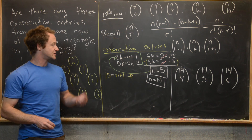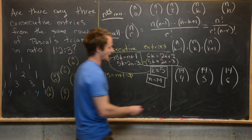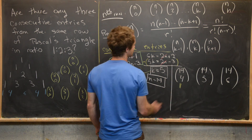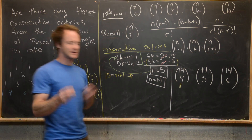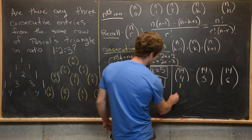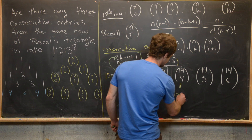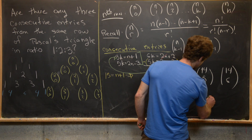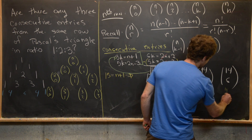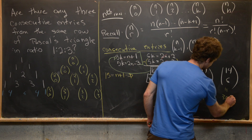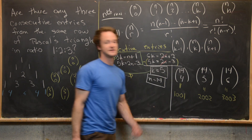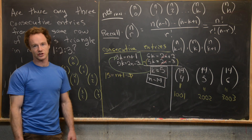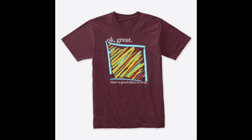Calculating these using the formula, we find that 14 choose 4 equals 1001, 14 choose 5 equals 2002, and 14 choose 6 equals 3003. Indeed these are in ratio 1 to 2 to 3, confirming our solution. That's a good place to stop.